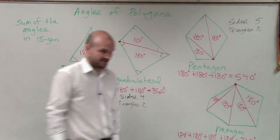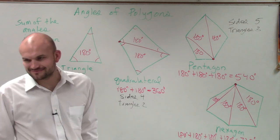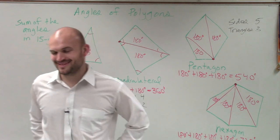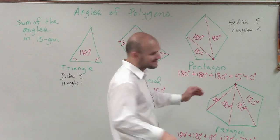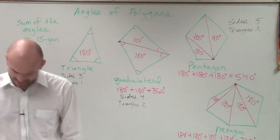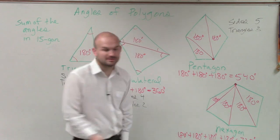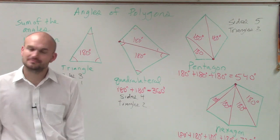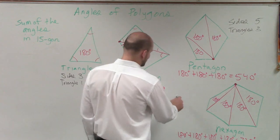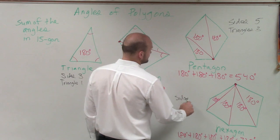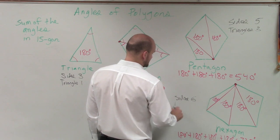All right, very good. How many sides does the hexagon have? Six. And how many triangles are in that hexagon? Four. All right, I can't throw anything by you guys. Six and the triangles.